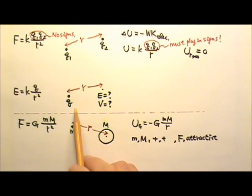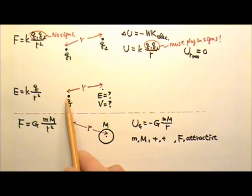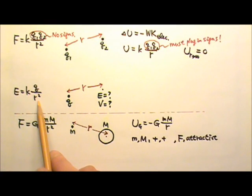For one point charge, we have the equation for finding the electric field produced by this point charge a distance r away: E equals kq over r squared, which is also called Coulomb's law.